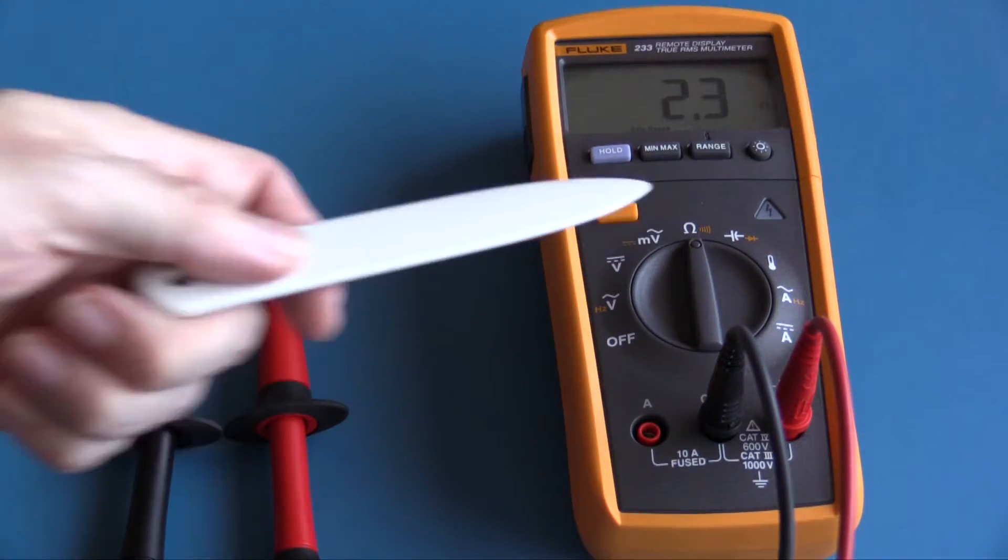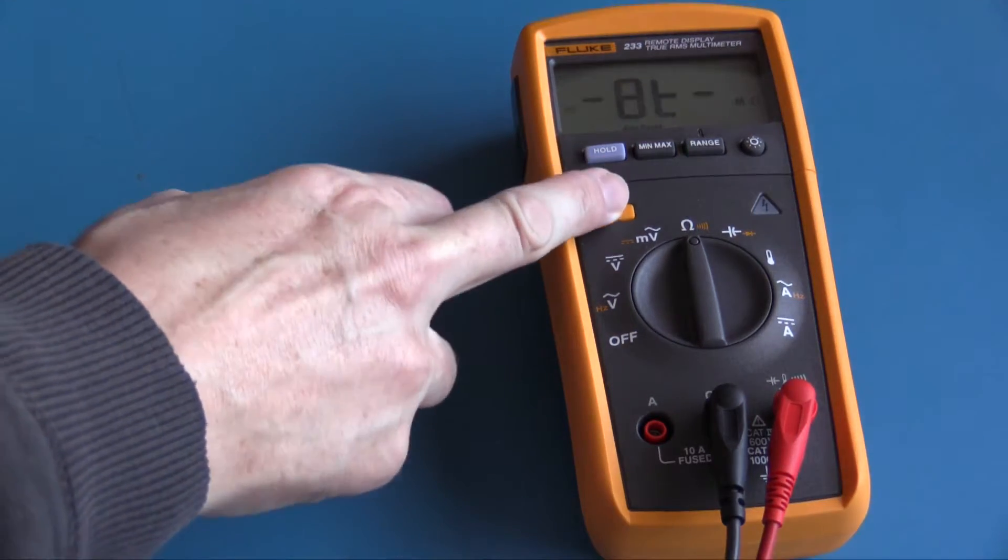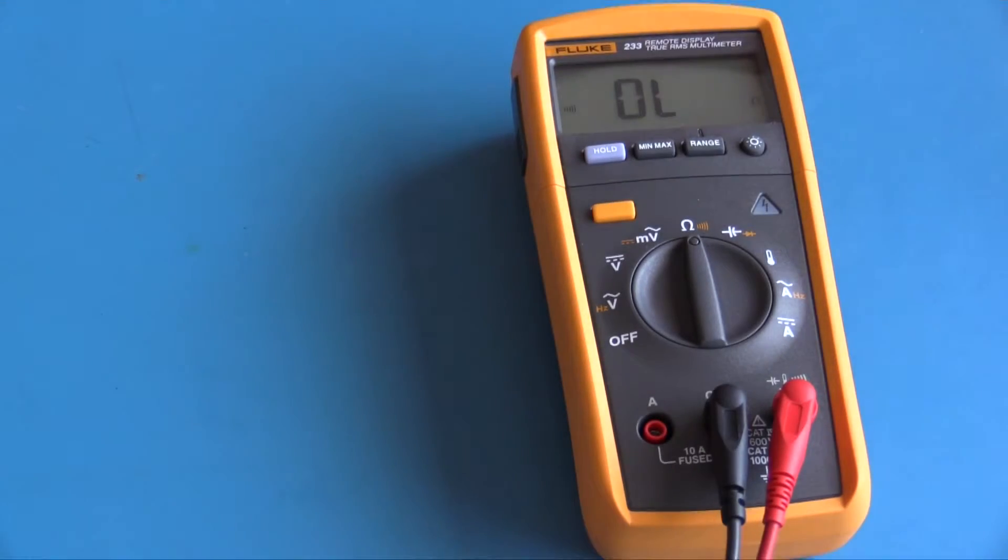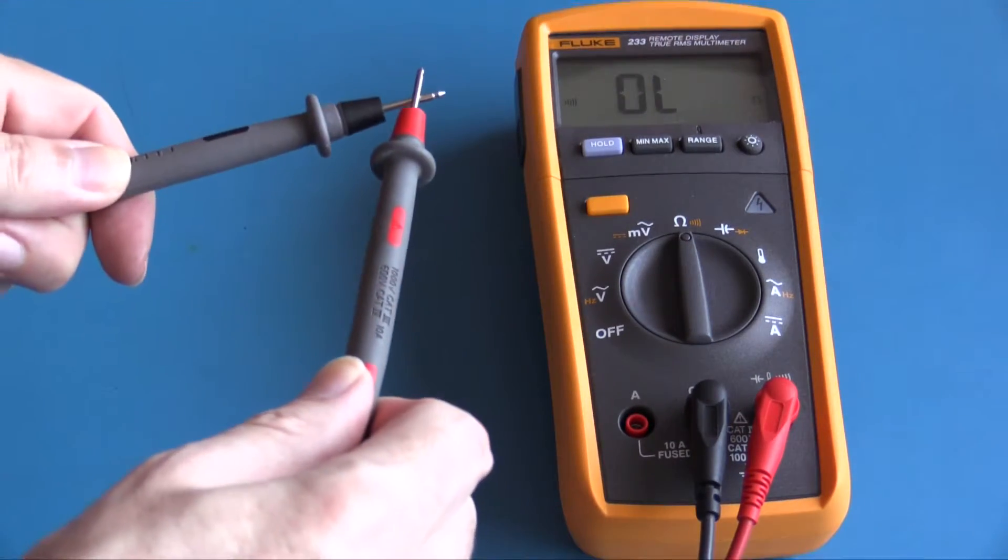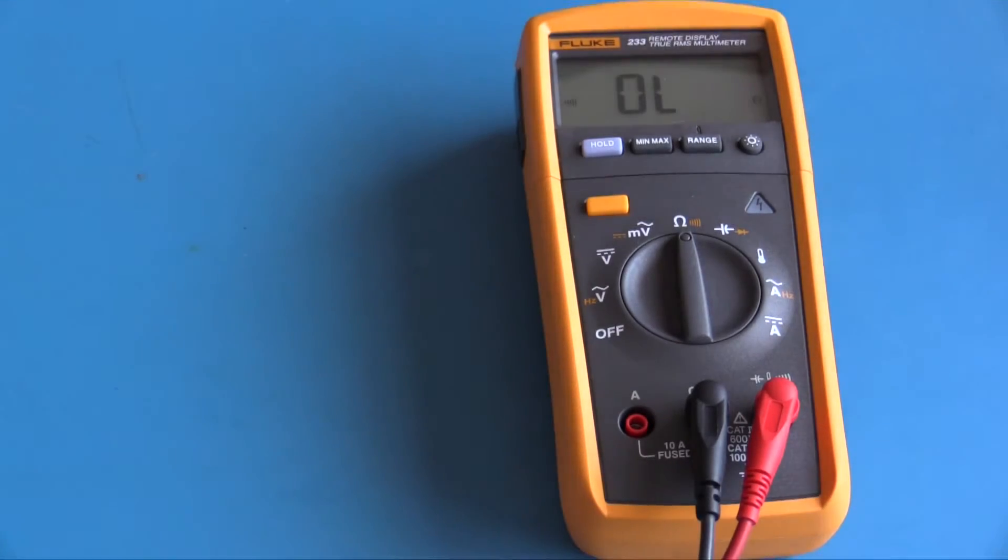I have now selected ohms. This is a 2.2 ohm resistor. The Fluke 233 is showing 2.3 ohms. I have the second function continuity selected. It's very quick and latched. The beeper is also nice and easy to hear.